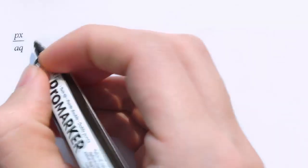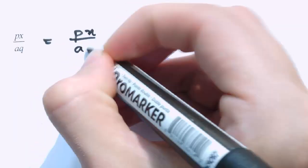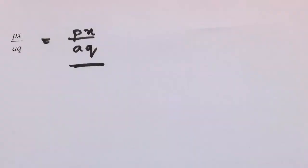One more — px over aq. This one's a trick question. Actually there are no common factors here: p, x, a, and q are all different. So the final answer, simplifying it down, would just be leaving it as it is. You just need to have the confidence to realise there are no common factors you can cancel.